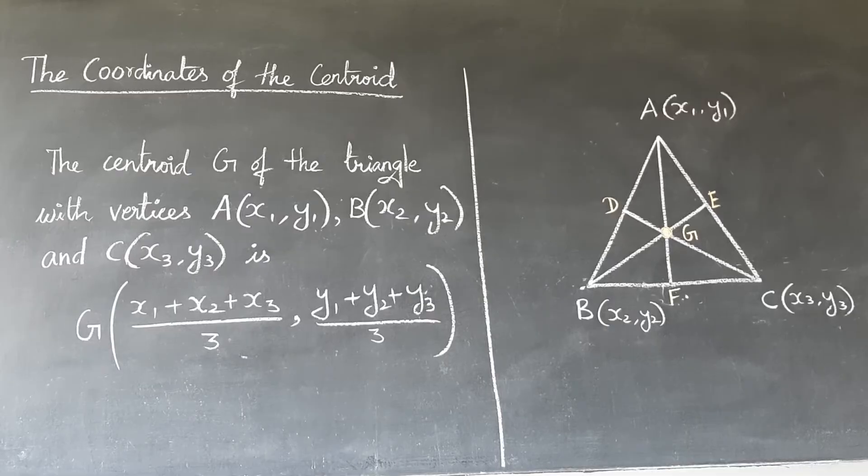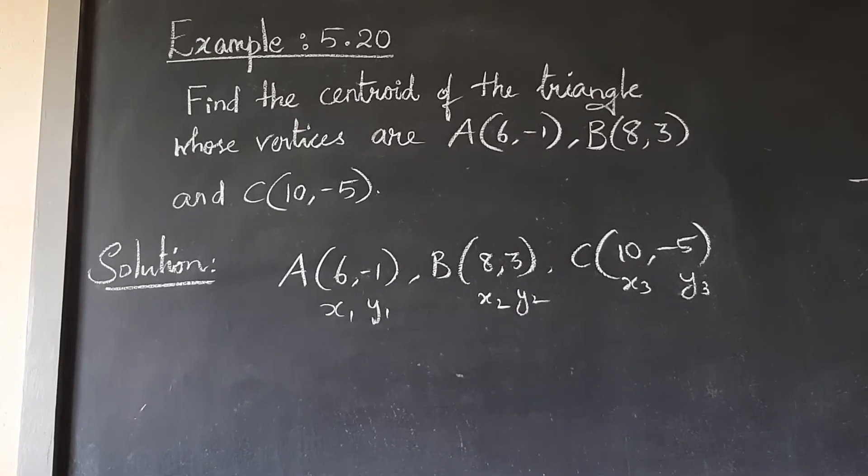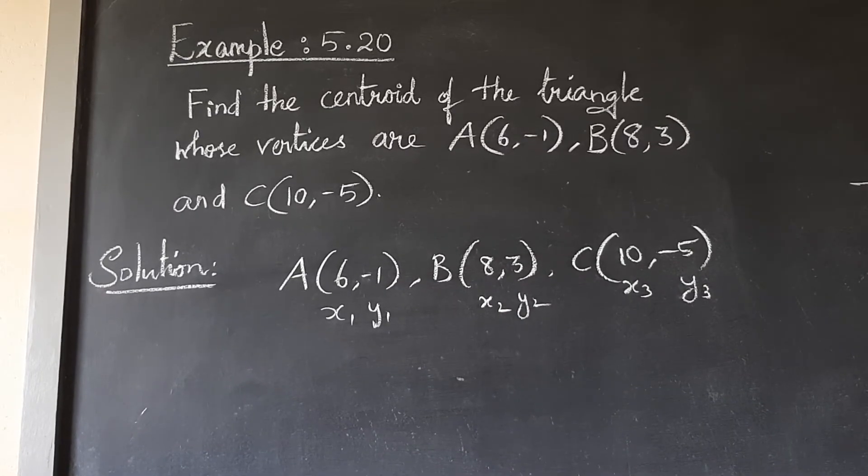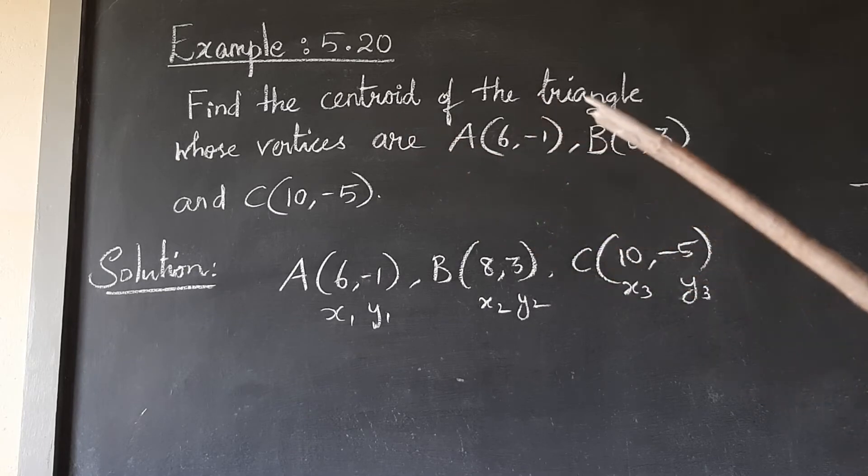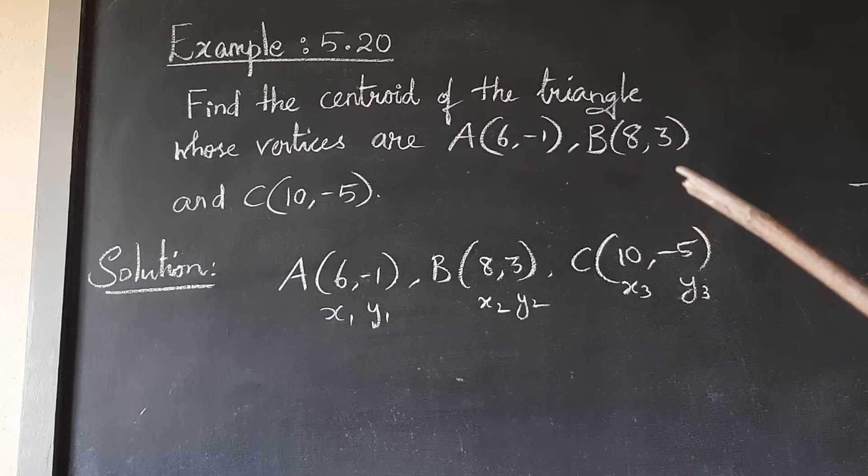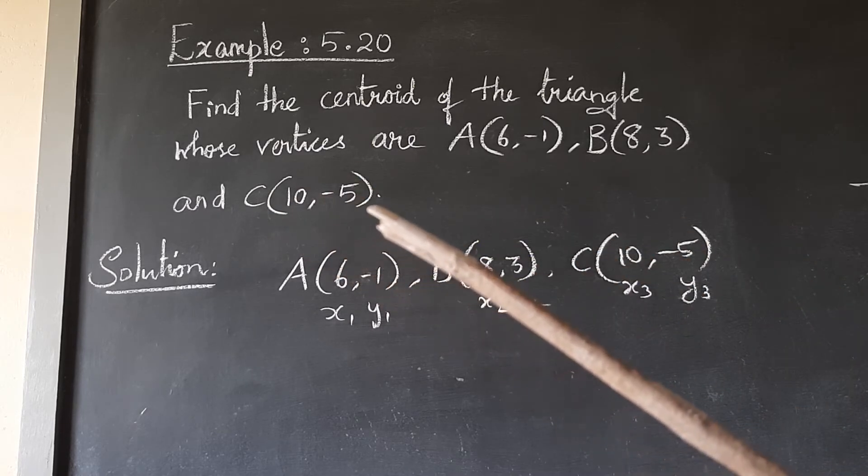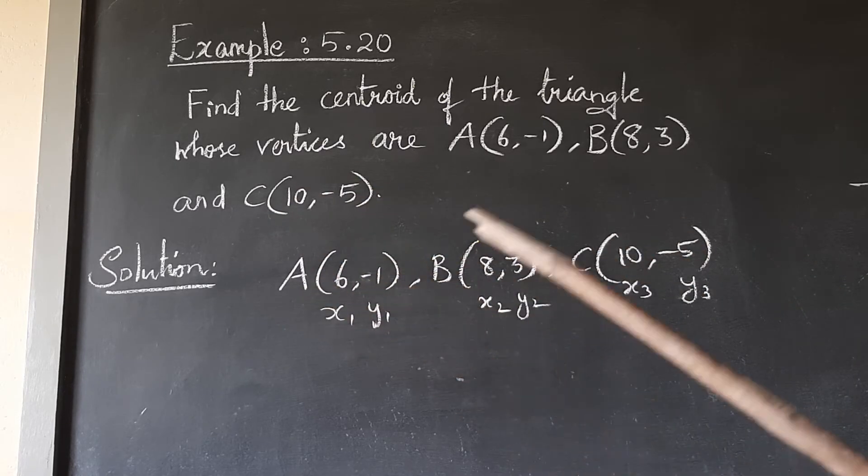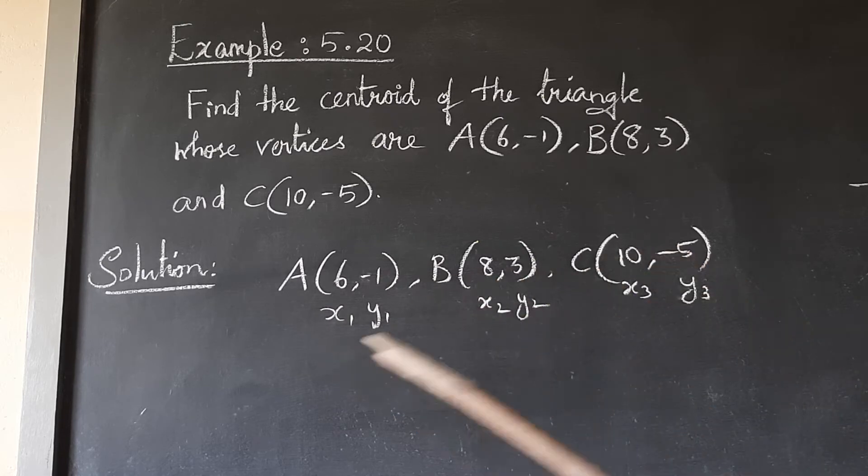Example 5.20: Find the centroid of the triangle whose vertices are A(6,-1), B(8,3), and C(10,-5). Okay, so A, B, C values are given.